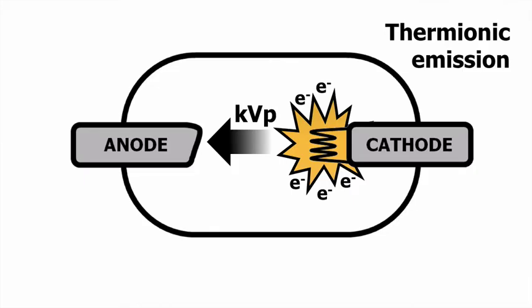The KVP creates a strong negative charge in the filament that forces the electrons across the x-ray tube. This makes sense, since opposites attract. The electrons are repelled by the negatively charged cathode and attracted to the positively charged anode.